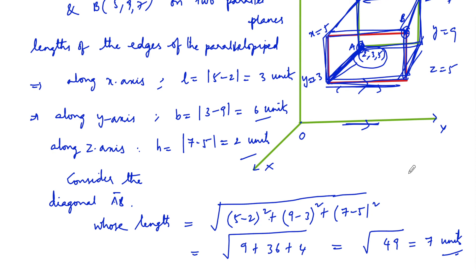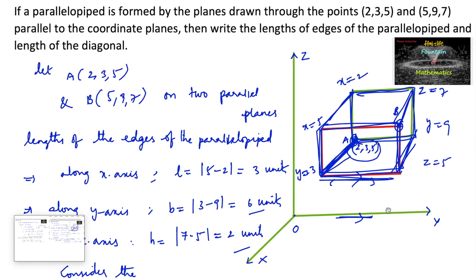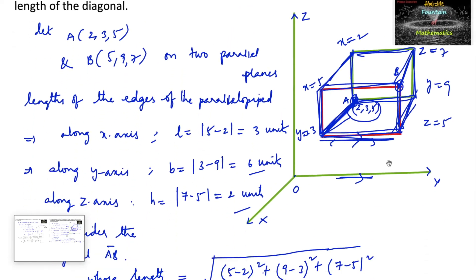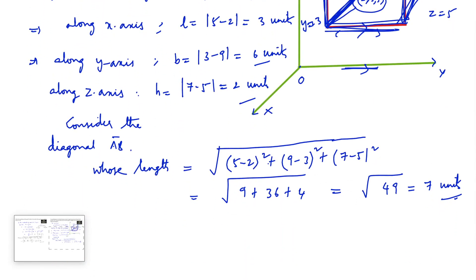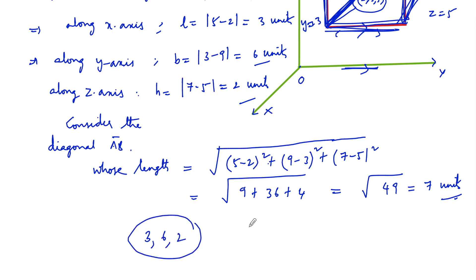So the lengths of the edges are 3 units, 6 units, and 2 units along the respective axes, and the diagonal AB is equal to 7 units.